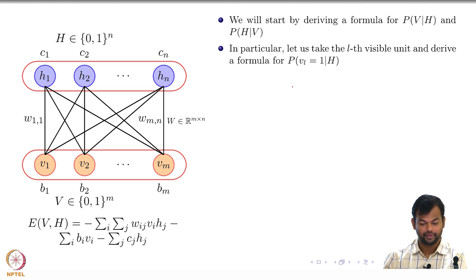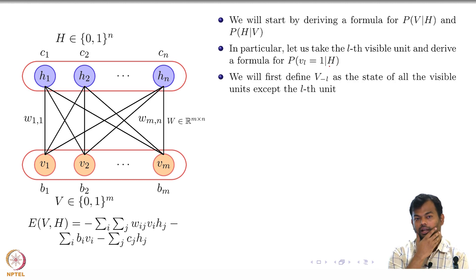Let us look at one of the visible variables. I am interested in getting a formula for that visible variable taking on the value one. What I will define is V_{-L}, which is essentially to denote the state of all the variables except this Lth variable. When I say V_{-L}, it means all the other visible variables except this variable. Is that clear? The set of all the visible variables except the one which I am interested in.